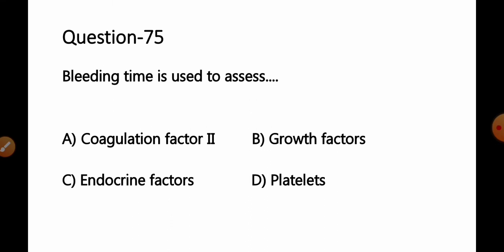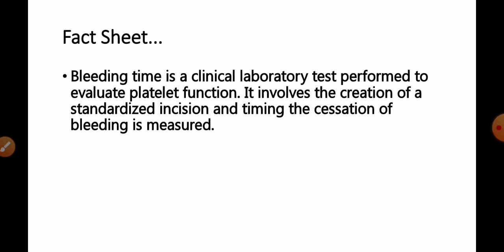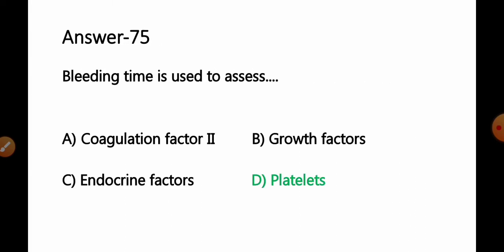Question number 75: Bleeding time is used to assess — Option A: coagulation factor 2; B: growth factor; C: endocrine factor; D: platelets. Bleeding time is a clinical laboratory test performed to evaluate platelet function. It involves the creation of a standardized incision and timing of the cessation of bleeding. So Option D — platelets — is the correct answer.